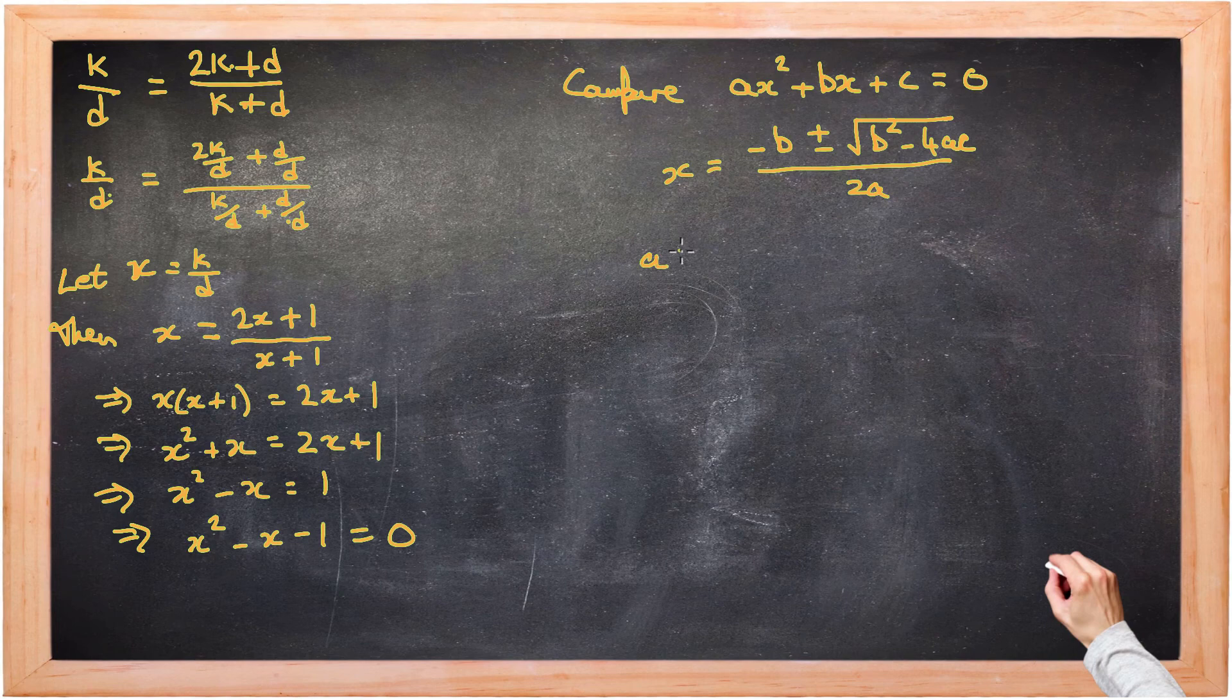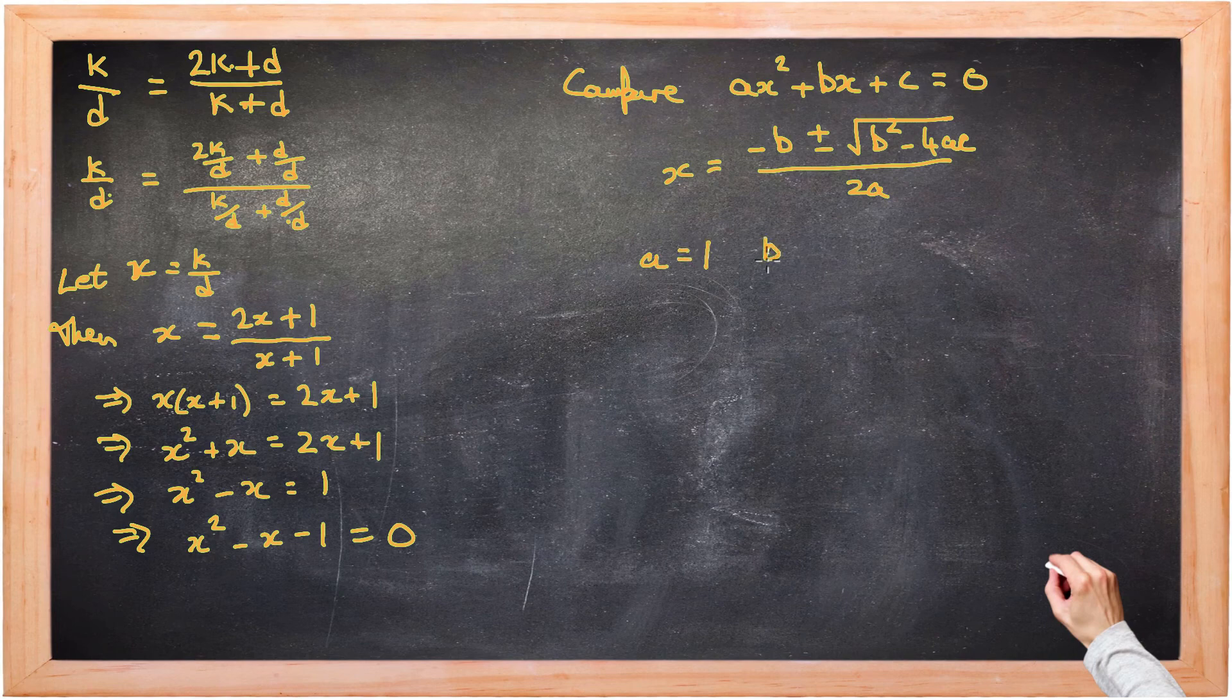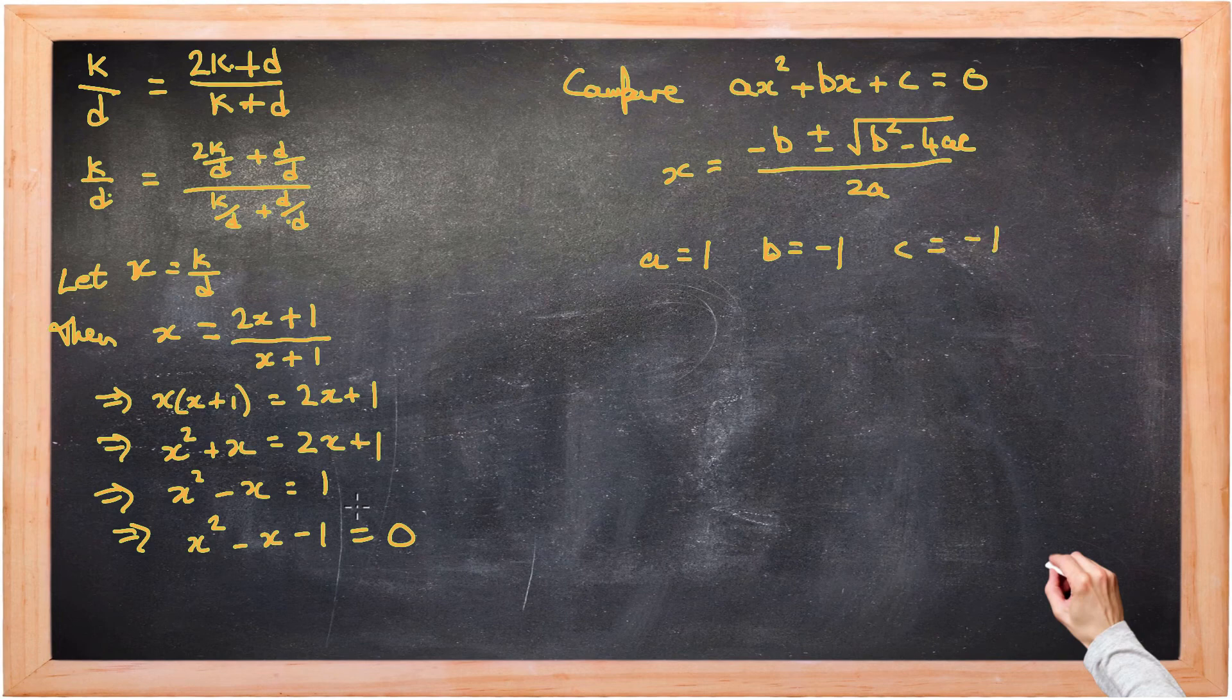Now we do know something about the general quadratic equation. ax² plus bx plus c equals 0. Where we know there's two solutions. Negative b plus or minus the square root of b² minus 4ac all over 2a. In this case, we know that a is 1. B is negative 1. And c is negative 1.